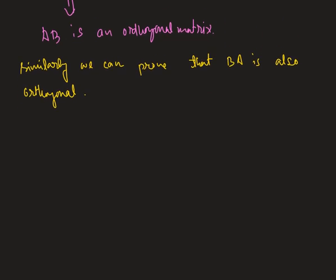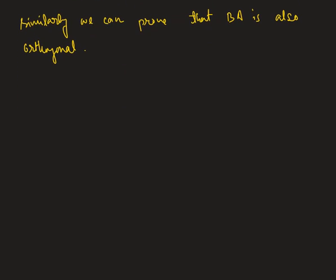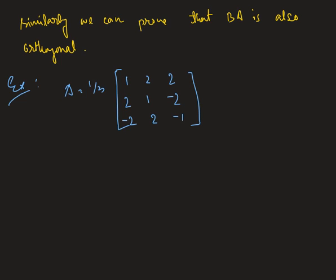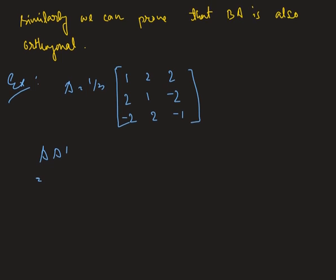Now let us check an example. Suppose a matrix A is given by one-third times the matrix with first row [1, 2, 2], second row [2, 1, -2], and last row [-2, 2, -1]. We need to determine whether A is an orthogonal matrix or not. By definition, if A is orthogonal then A times A-transpose equals I. So let's check it.